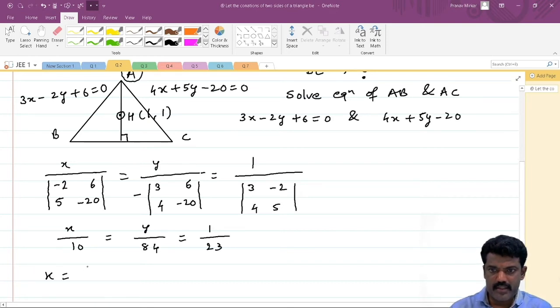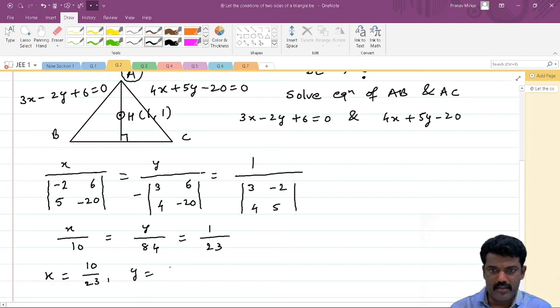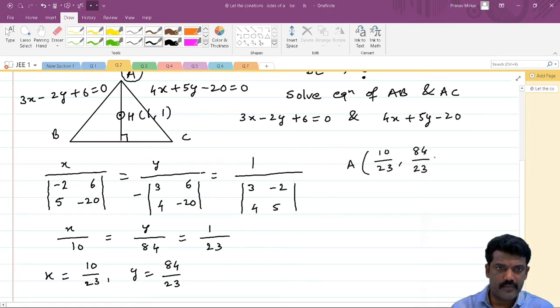This will be x upon 10 equal to y upon 84 equal to 1 upon 23. So here x is 10 by 23 and y is 84 by 23. So A point has coordinates (10/23, 84/23).